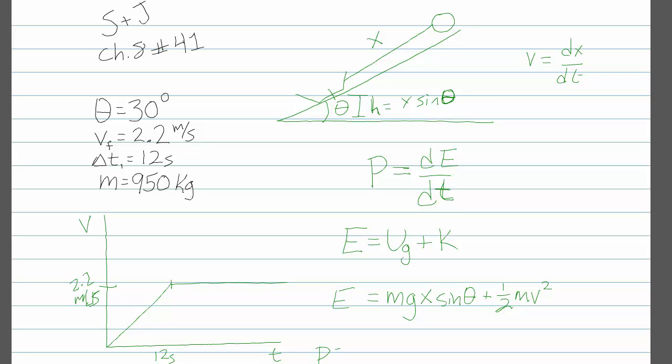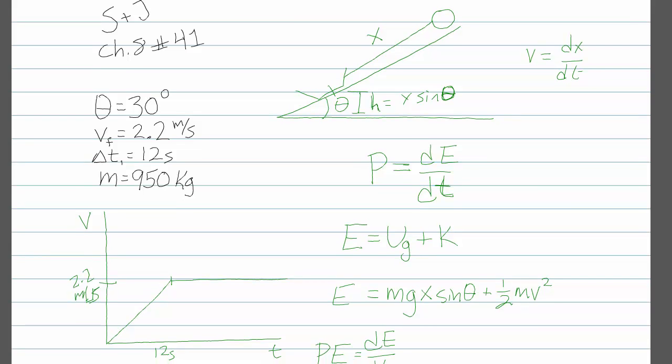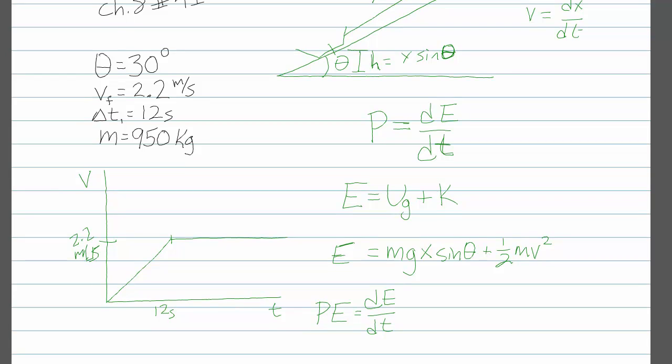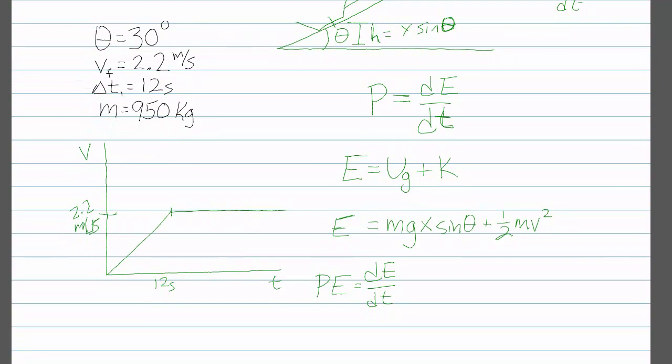Now, the time variable doesn't appear explicitly anywhere in our equation for energy, but neither is everything constant. We have two variables that are functions of time. Our x is a function of time, so is our v.